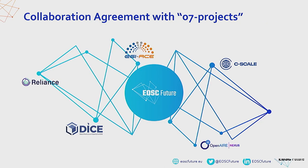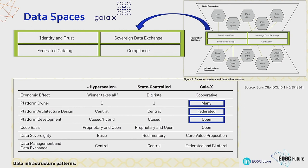In a similar way, there is collaboration with the so-called O7 projects, which are e-infrastructure projects on comparative data, on storage, and on high-performance computing. This is also being connected with the EOSC Future project. Data spaces have been mentioned, and while there is currently no formal agreement with, for example, Gaia-X, there is a lot of discussion going on around data spaces.